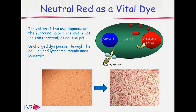The NeutralRed uptake endpoint is used to assess viability for the 3T3 assay. NeutralRed is an uncharged dye that passively crosses cell and lysosomal membranes; the acidic pH of lysosomes charges the dye, trapping it inside. Viable cells with intact membranes retain the NeutralRed dye, while dead cells or those with membrane integrity issues cannot. Micrographs show the 3T3 cells before and after NeutralRed addition, with clear intracellular accumulation in the lysosomes.